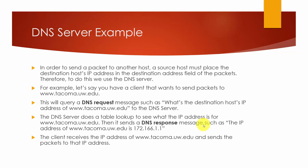The DNS server does a table lookup to see what the IP address is for UWT. Then it sends a DNS response message such as, the IP address of University of Washington Tacoma, UWT, is 172.166.1.1. The client then receives the IP address of UWT and sends the packet to that address. And that is the example of how DNS server works.